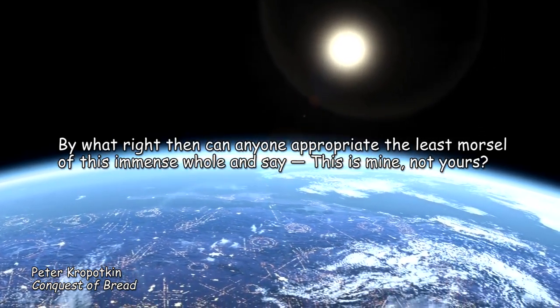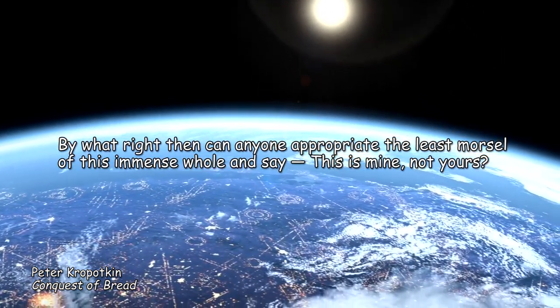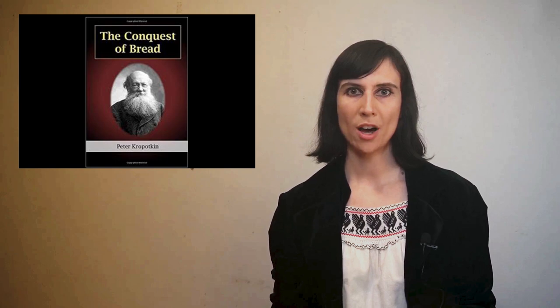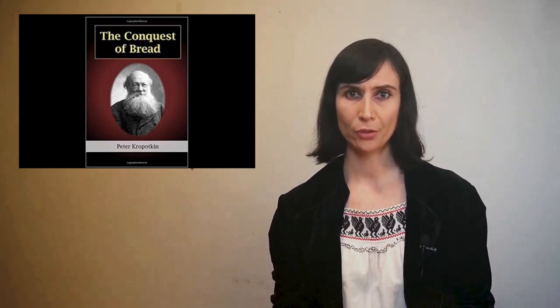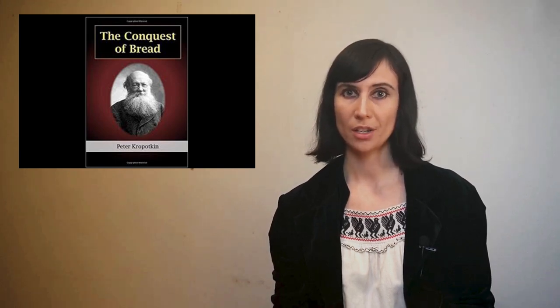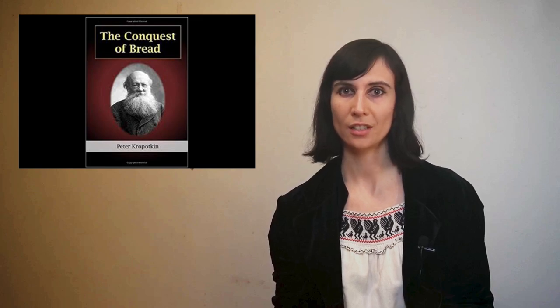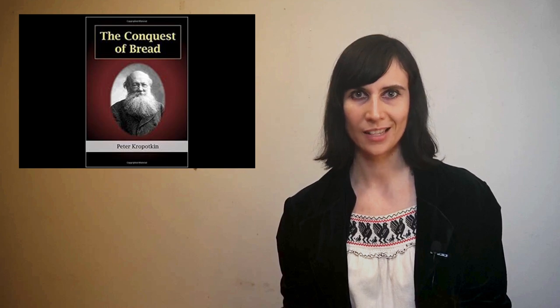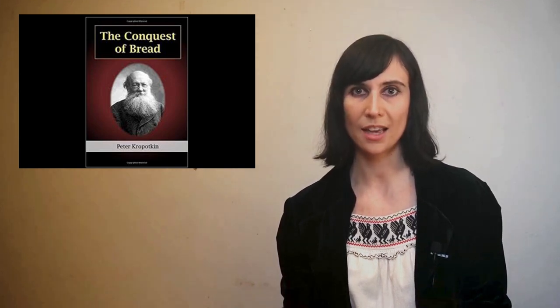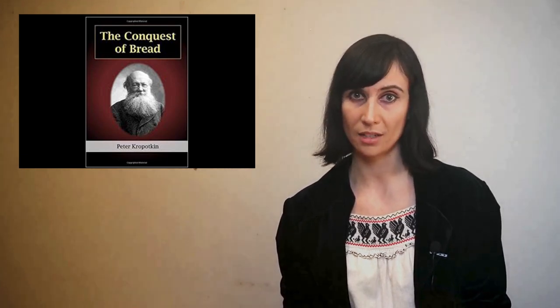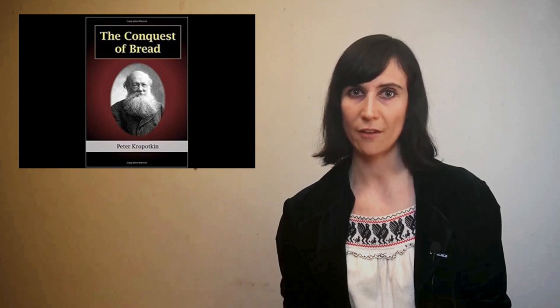By what right, then, can anyone appropriate the least morsel of this immense whole and say, this is mine, not yours? What Kropotkin has said here is like a big tidal wave sweeping away the moral and philosophical justification for meritocracy. Because, as Kropotkin puts it in chapter 3, how then shall we estimate the share of each in the riches which all contribute to a mass? The wealth and wonders that humanity produces is an achievement that belongs to humanity as a whole, and so that achievement should be used to benefit humanity as a whole, spreading that benefit to each and every individual.